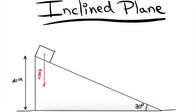Hey guys, welcome back to a new video. In this session we will be looking at the motion of an object on an inclined plane. It will be the first video in my series on two-dimensional kinematics and it's a direct follow-up on my video on one-dimensional kinematics. Here I will be solving a complete exercise step by step. Before we start, if you have any suggestions for future topics let me know in the comment section below.